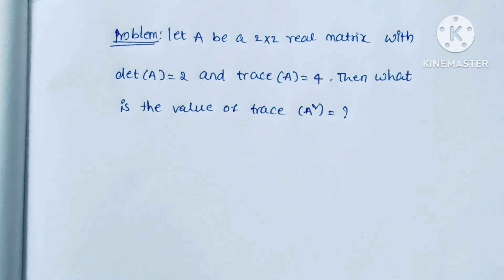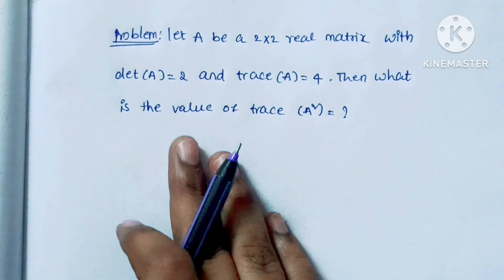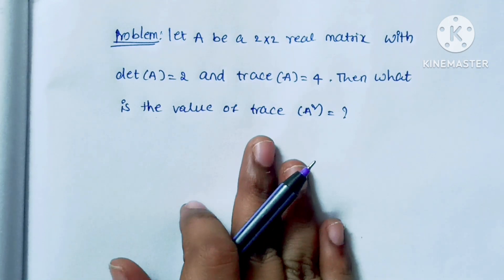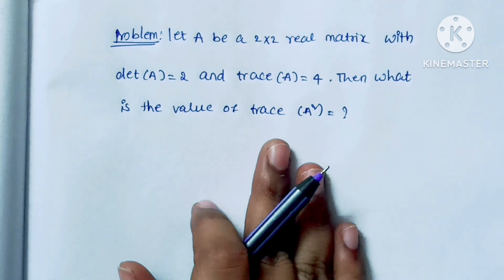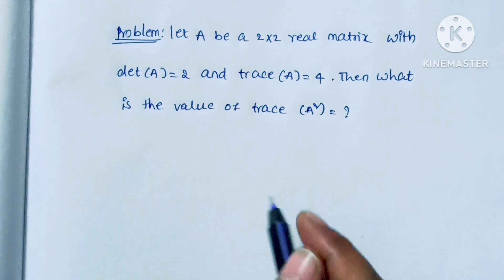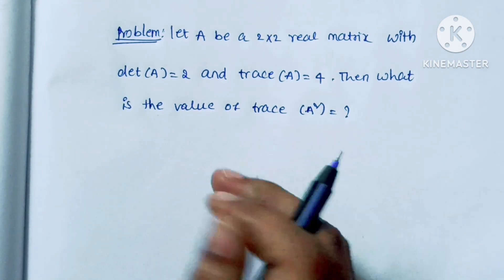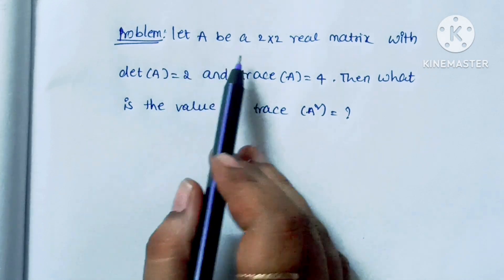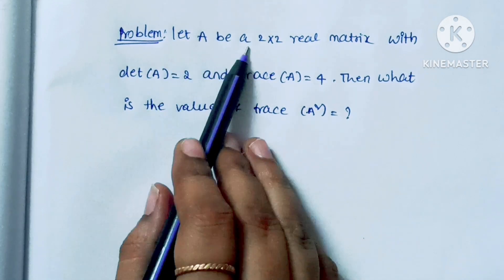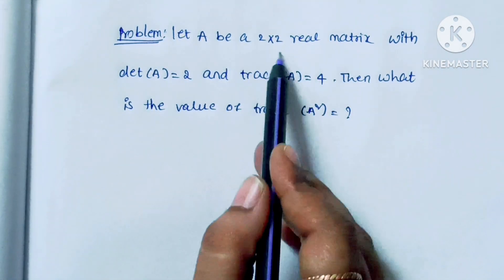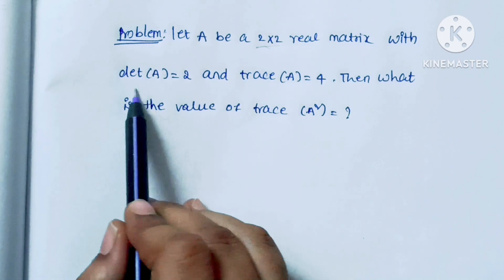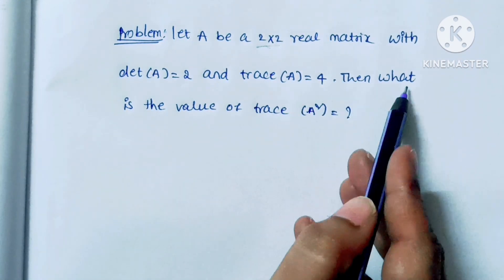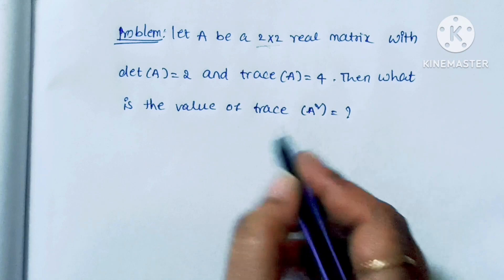If anyone wants to solve this problem without seeing this video, solve it and give your answer in the community tab. If you want to see the solution for this matrix, see here. They have given A, a real matrix of 2 by 2 order, with determinant equal to 2 and trace A equal to 4. Then what is the value of trace A square?